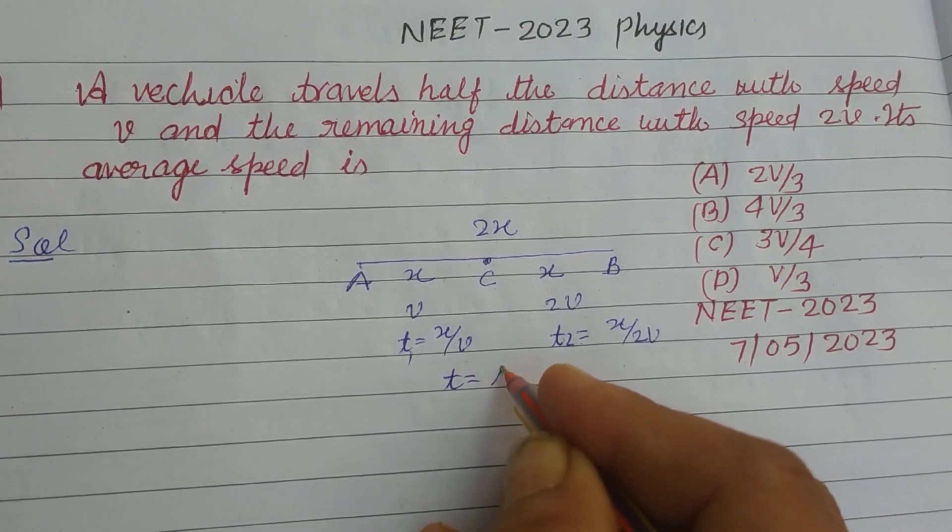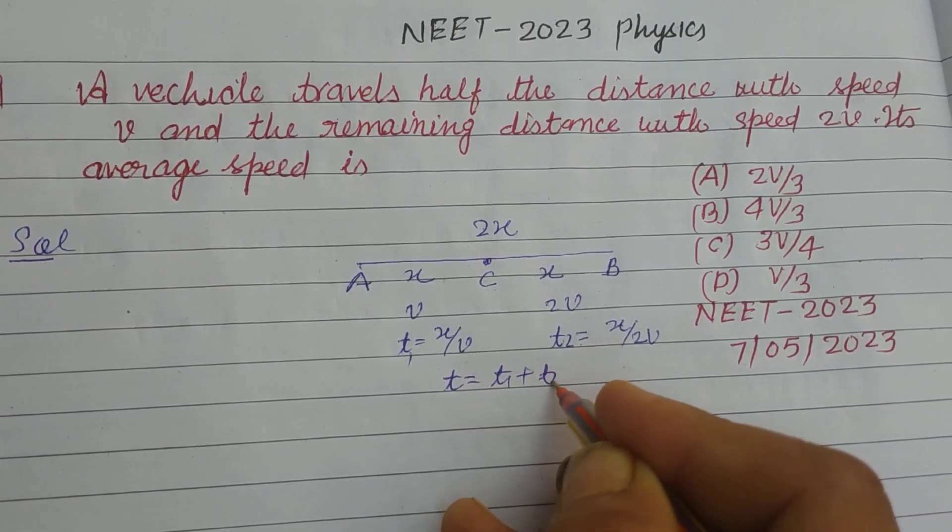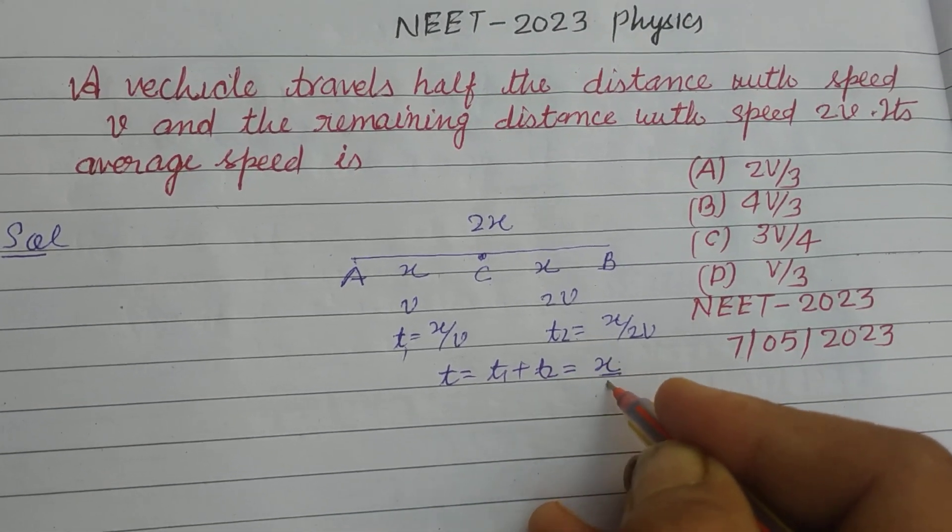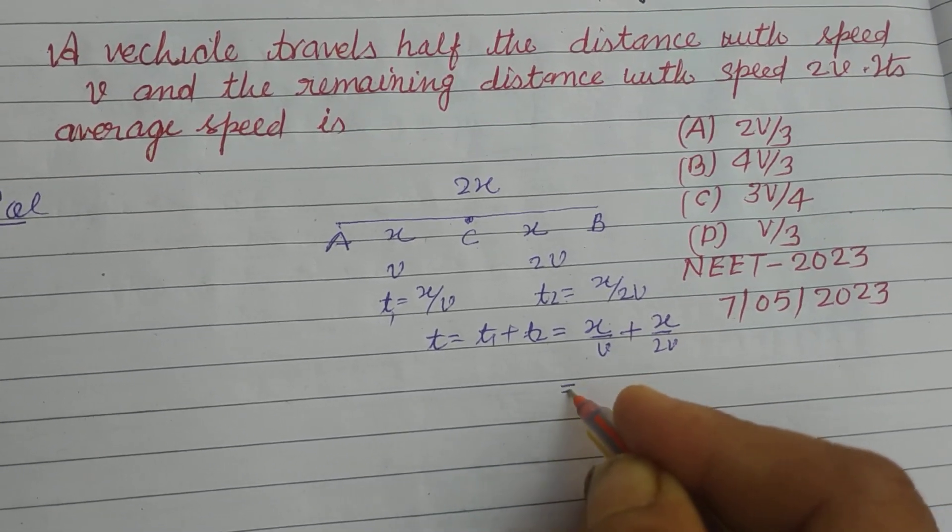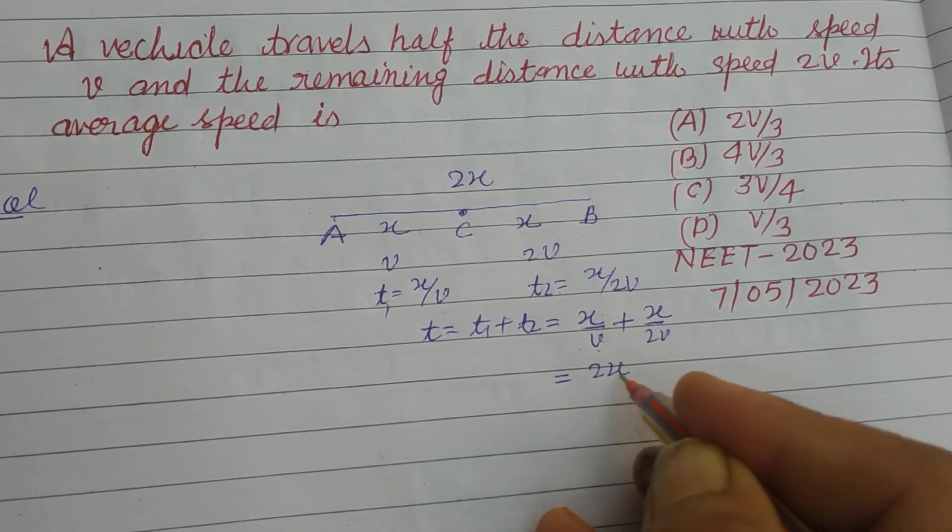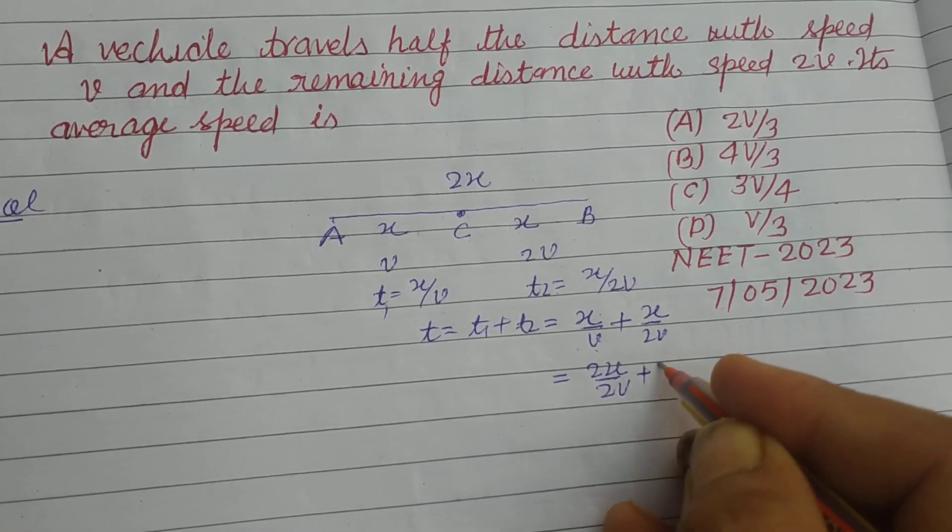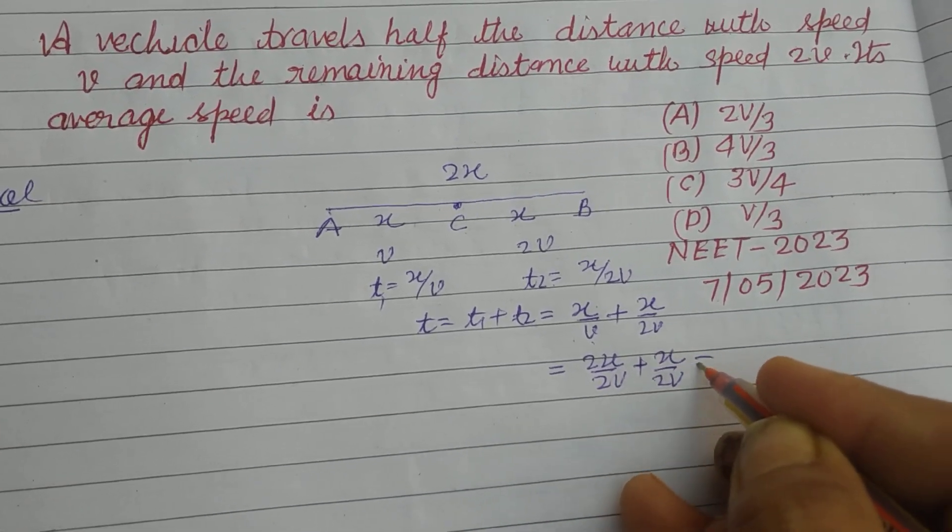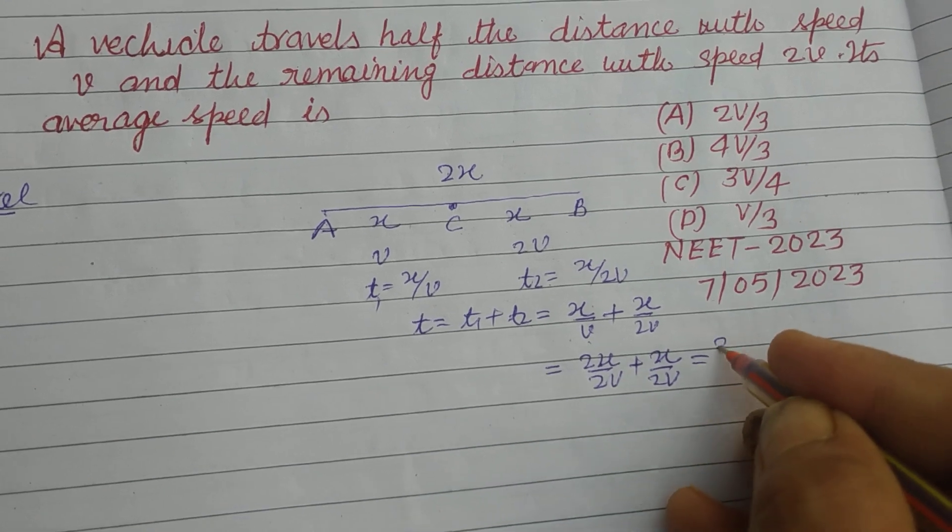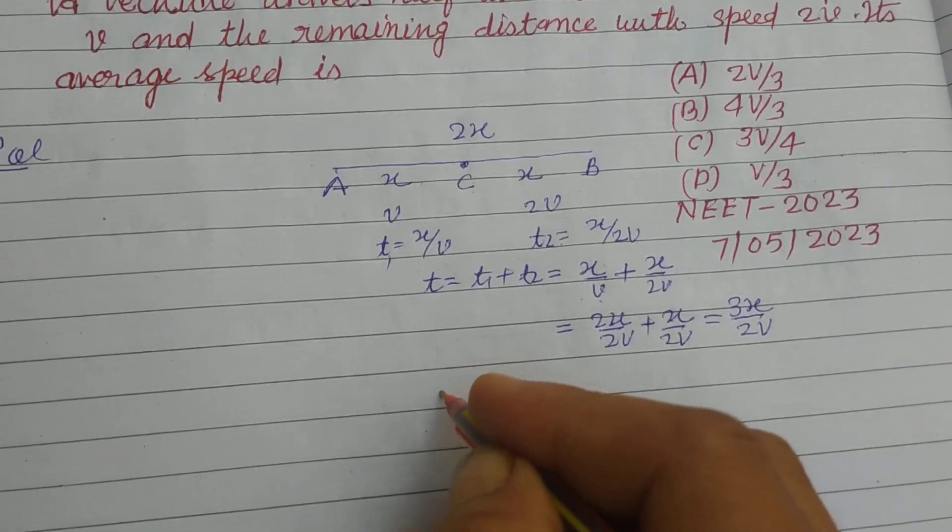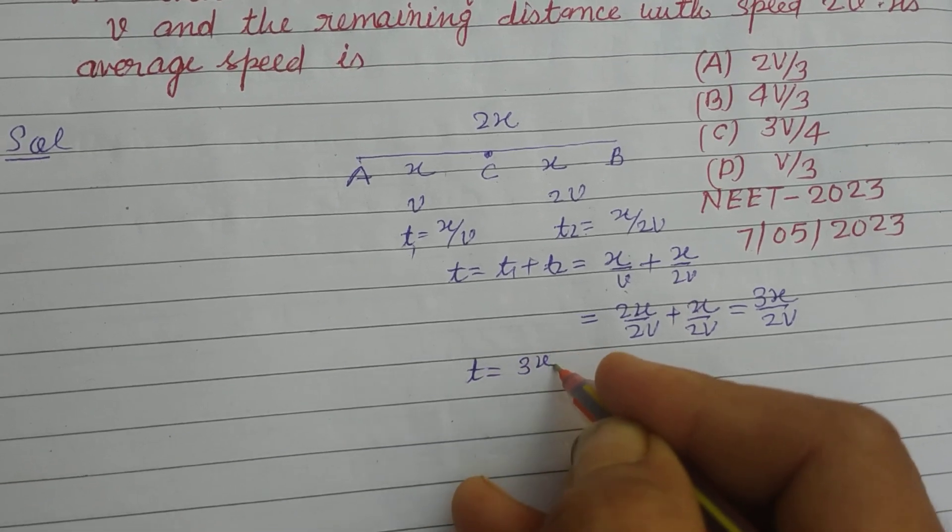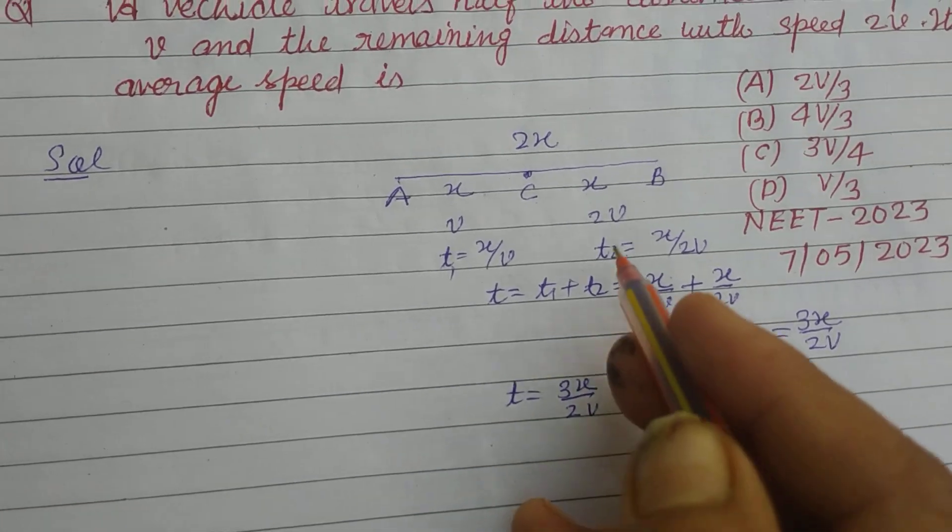So total time t equals t1 plus t2, this is x over v plus x over 2v. Multiplying by 2, 2x over 2v plus x over 2v. So time is 3x upon 2v.